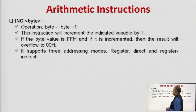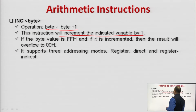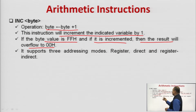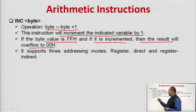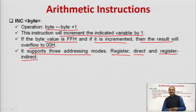Next is the INC byte instruction. This instruction increments the byte by 1 and stores the result into the destination. If the byte value is FFh and it is incremented, the result overflows to 00h and the overflow flag is set to 1. This instruction supports three addressing modes: register, direct, and register indirect addressing modes.